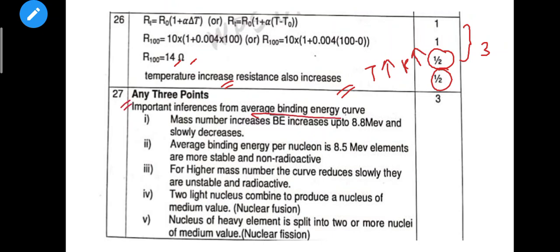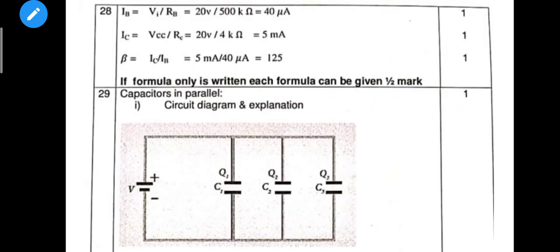Question 27: important inferences from the binding energy curve. This curve has 5 inferences — you can write 3 for full marks (3 × 1 = 3 marks). It is better to write all five.